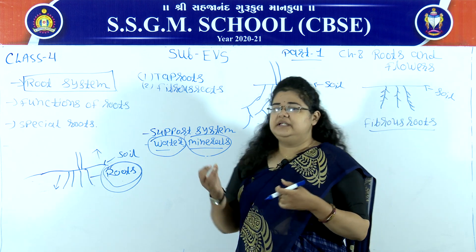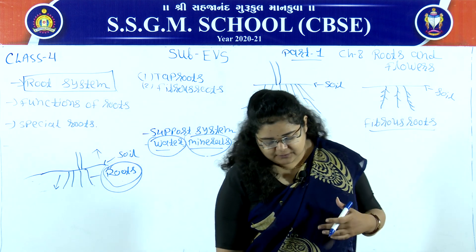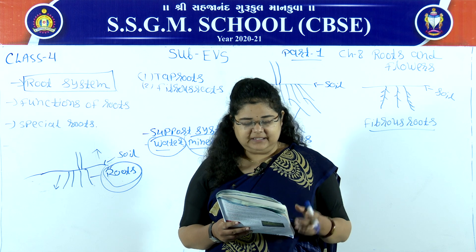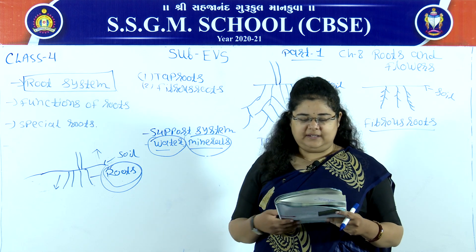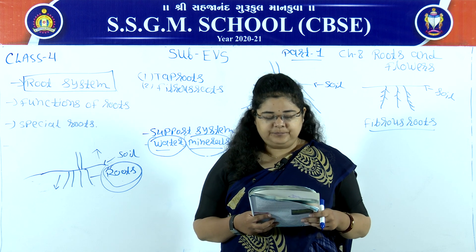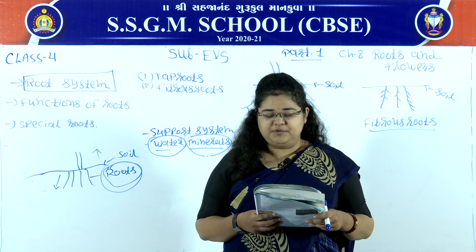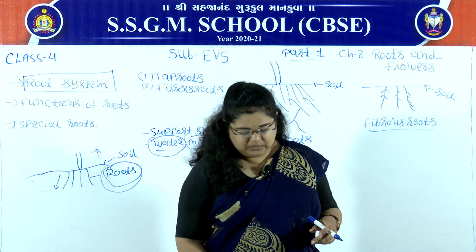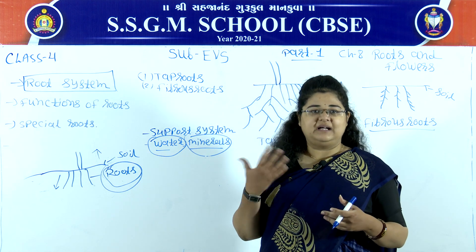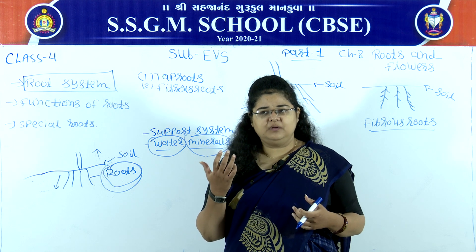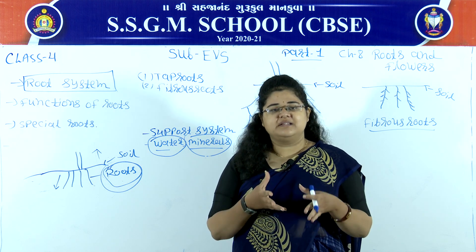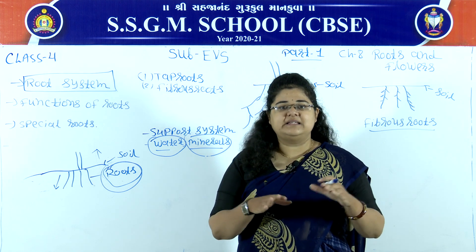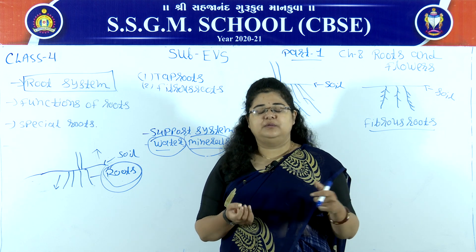Roots are a very important part — without roots a plant cannot survive. Some roots like carrot, radish, and turnip store extra food. Carrot is a type of root. If you see how a carrot is attached in the ground, you will understand this clearly.